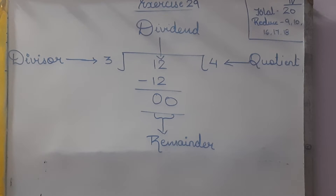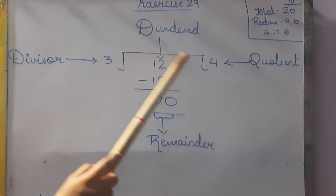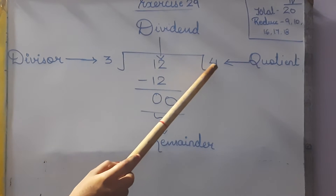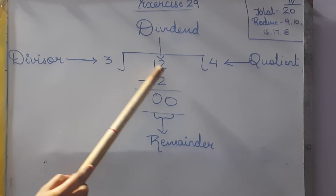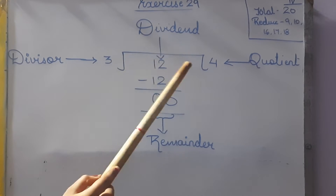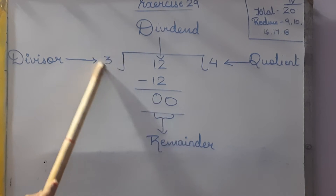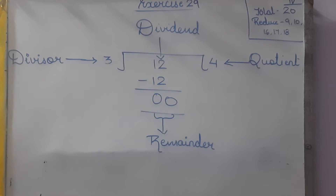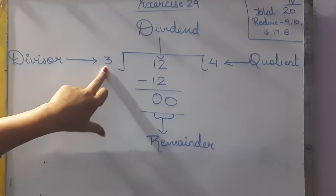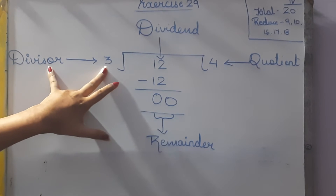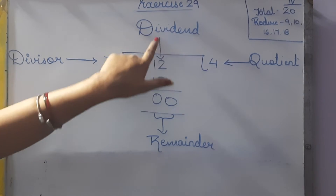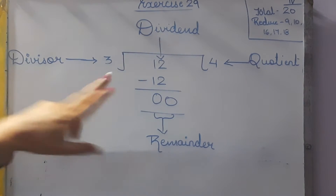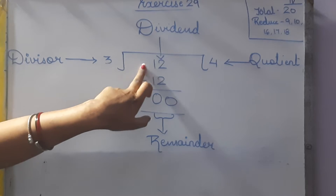Now, what is the question? Find the quotient. Before starting the exercise, I am going to explain something. We have done: 12 divided by 3 is equal to 4. What is this 3? This 3 is known as the divisor — the number which divides. The number which is divided is known as the dividend.